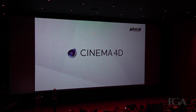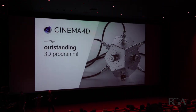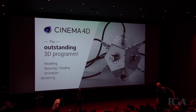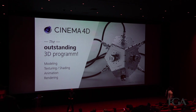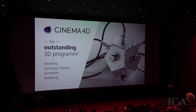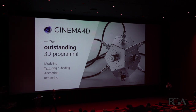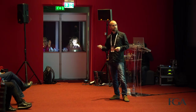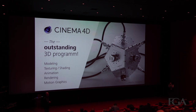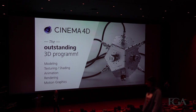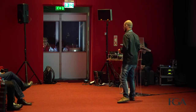Cinema 4D, for those who don't use it — for me, it's the outstanding 3D software. Cinema 4D is a 3D all-rounder package. What you can do with it is modeling, texturing and shading, animation, lighting, rendering — everything you need to do inside of Cinema 4D. And of course, as the last point, motion graphics. And that's what we want to talk about today.